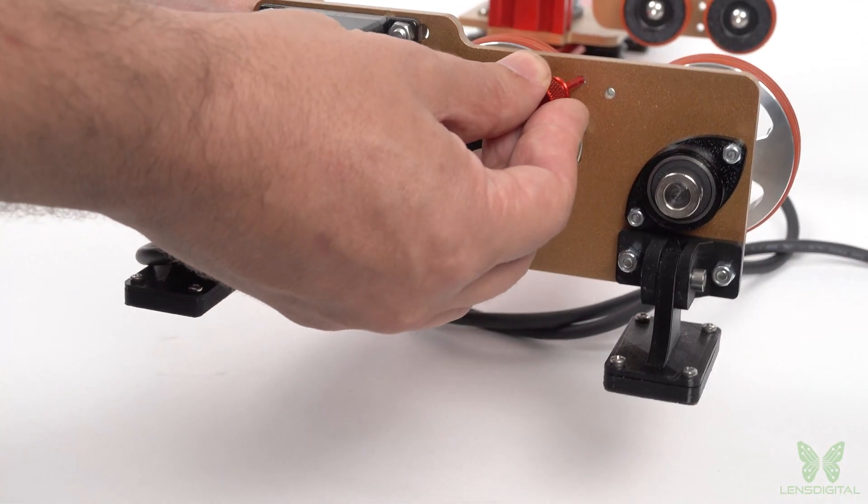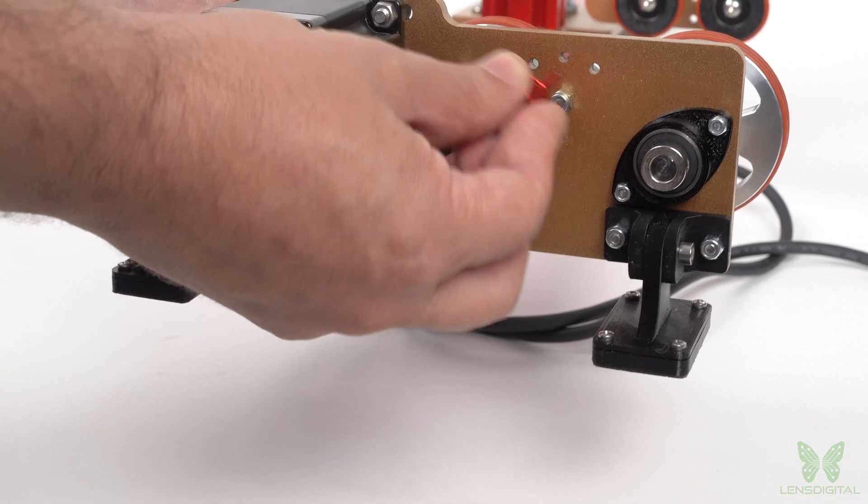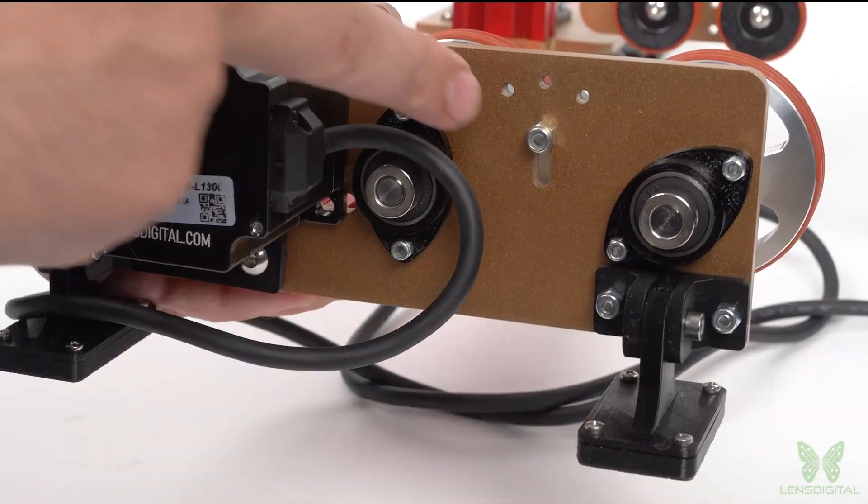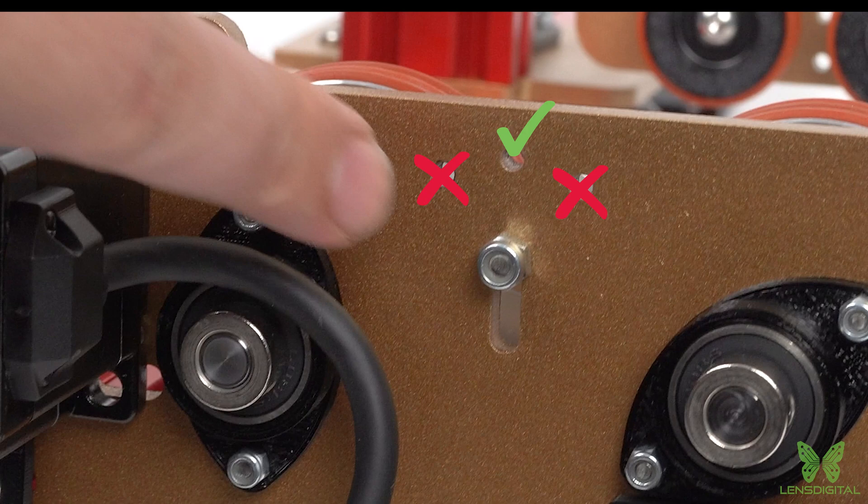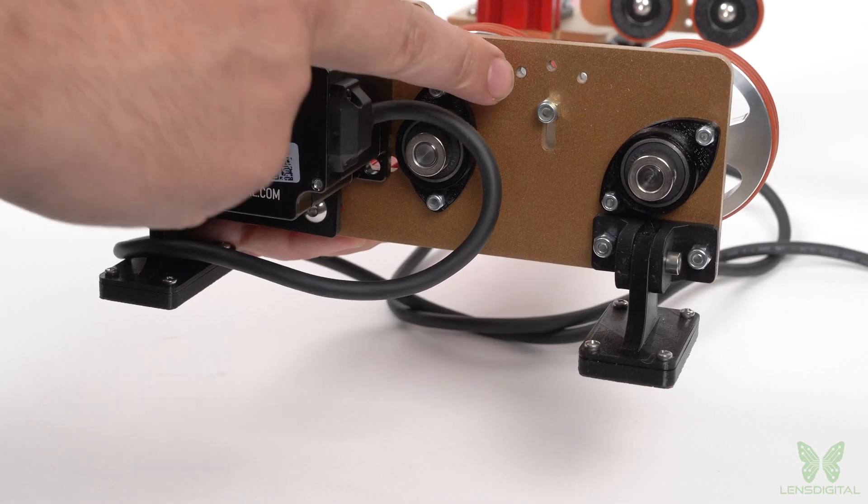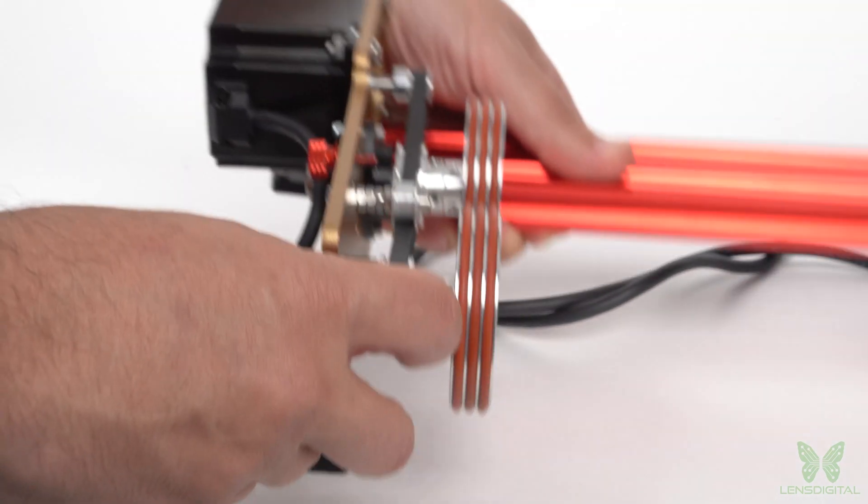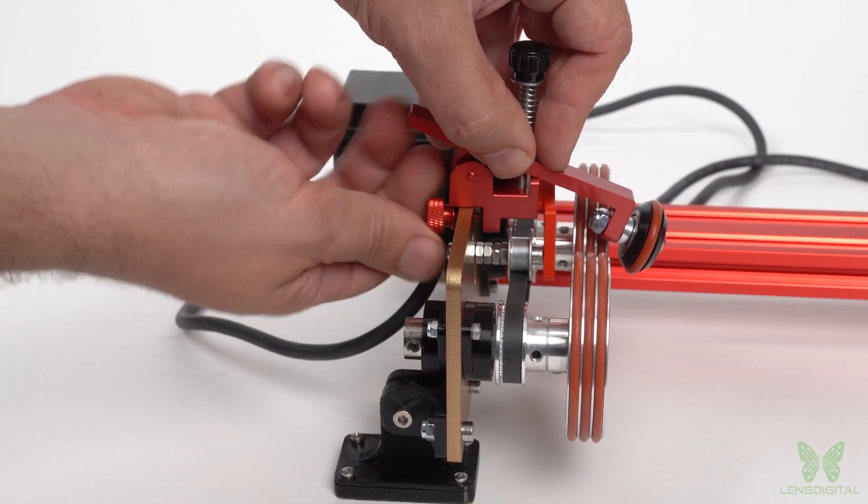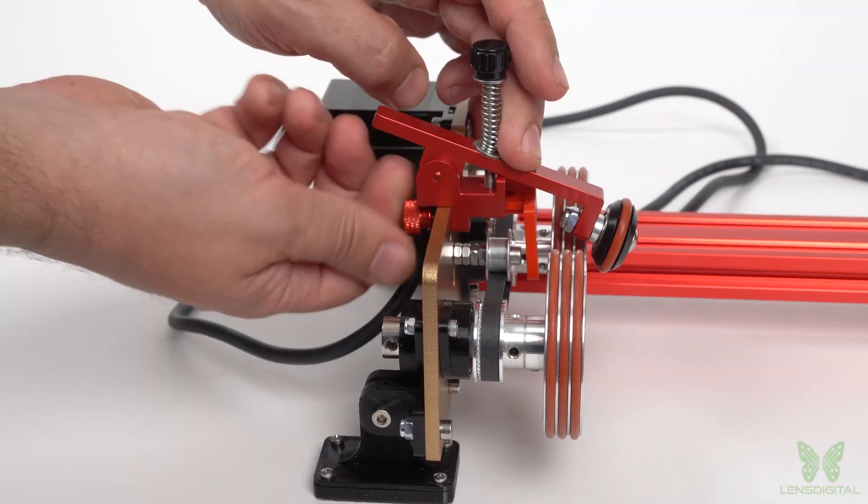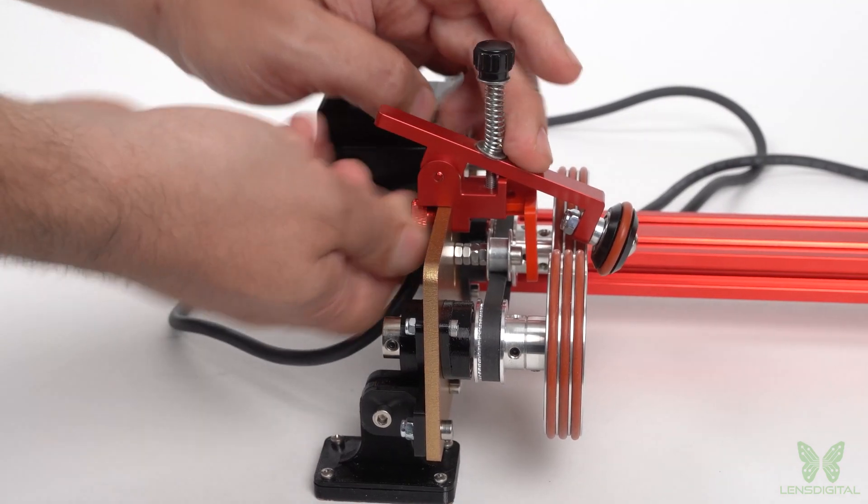Now, insert one of the M3 thumb screws from the motor side into the middle hole on the top. Do not use the other two holes. Secure the clamp with the thumb screw. And you're done.